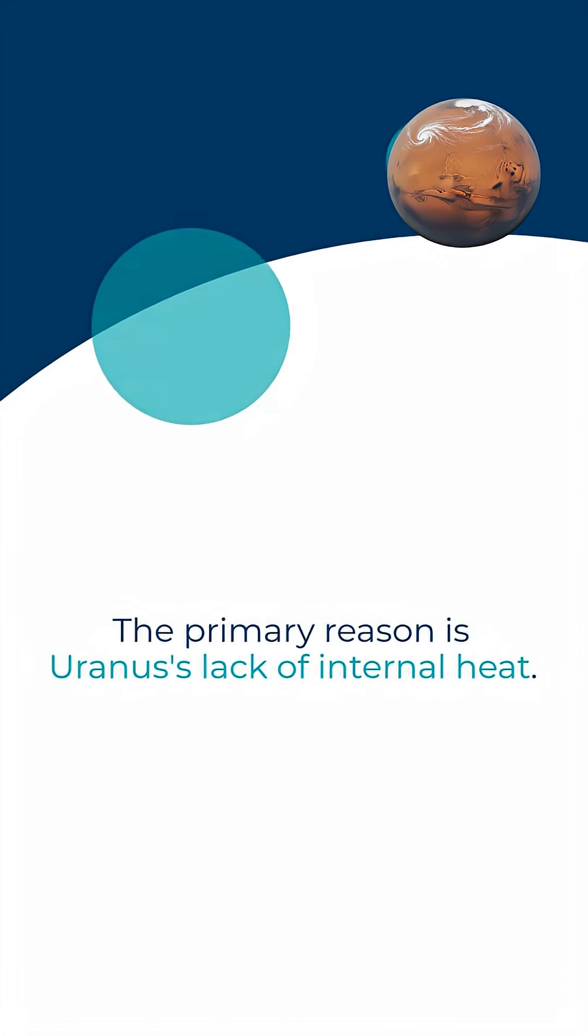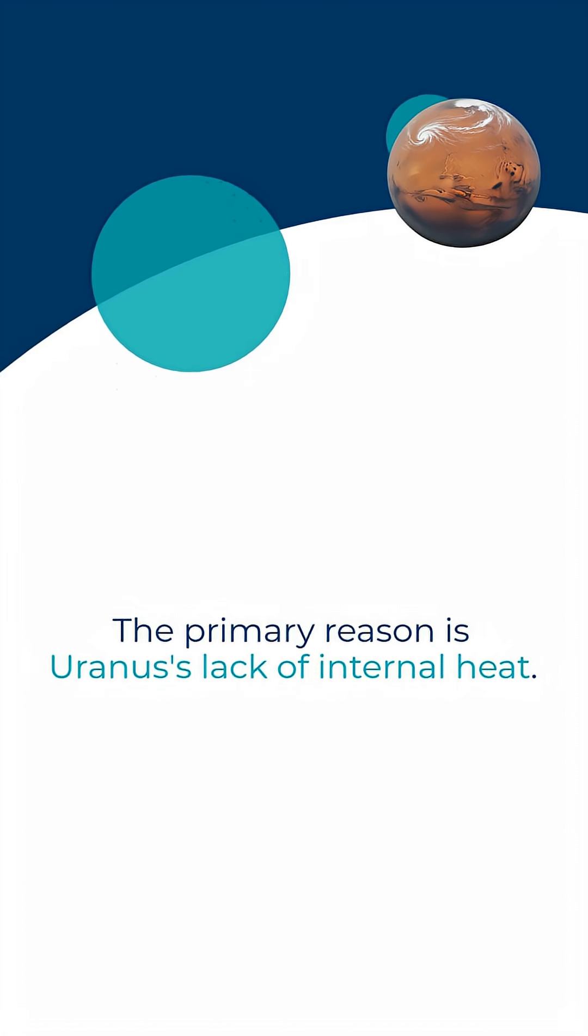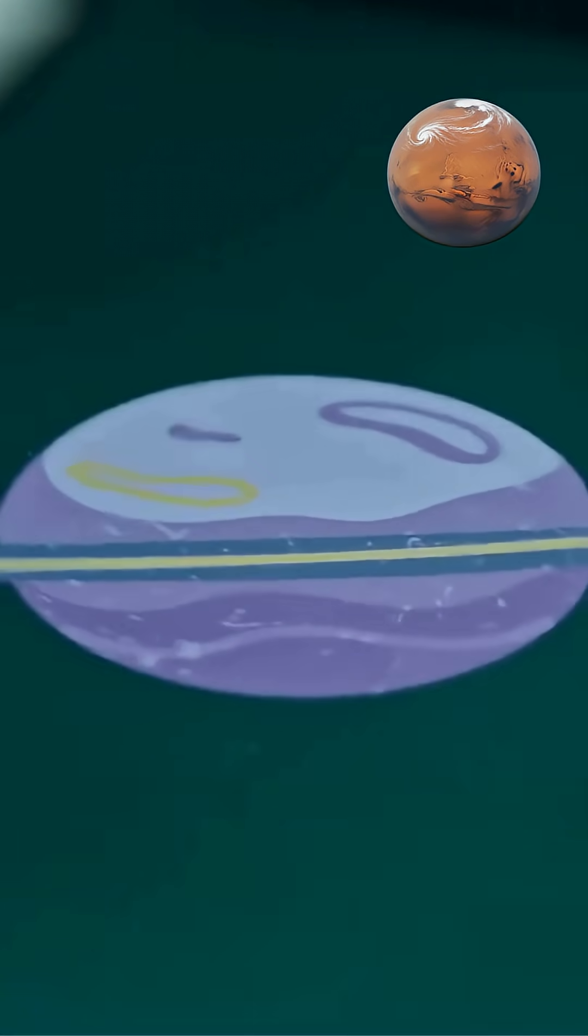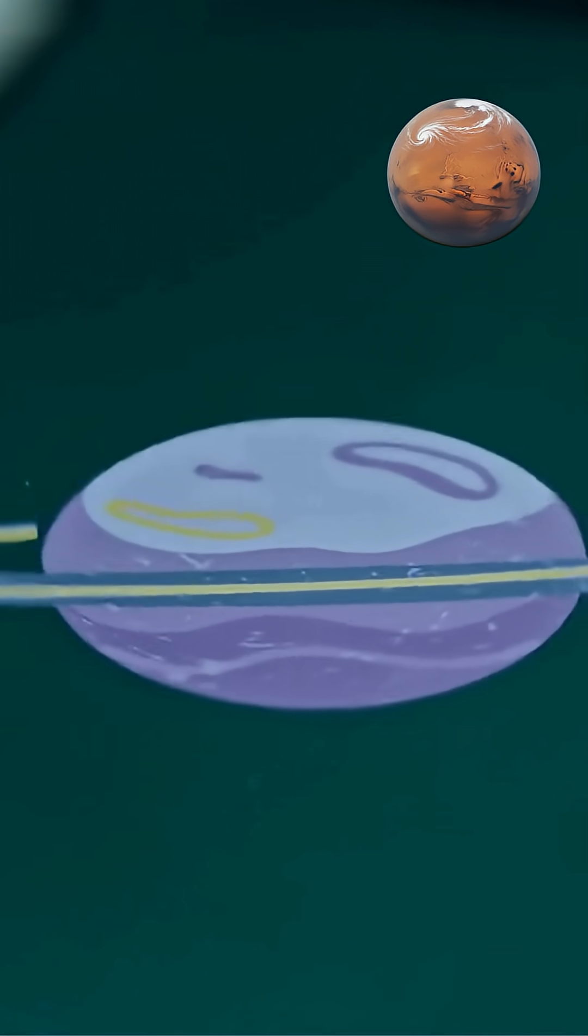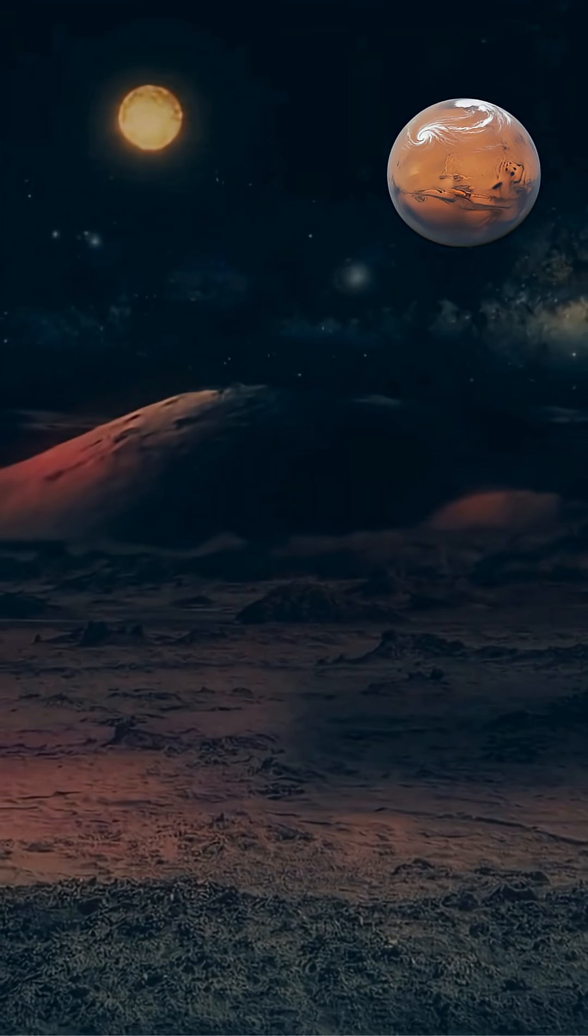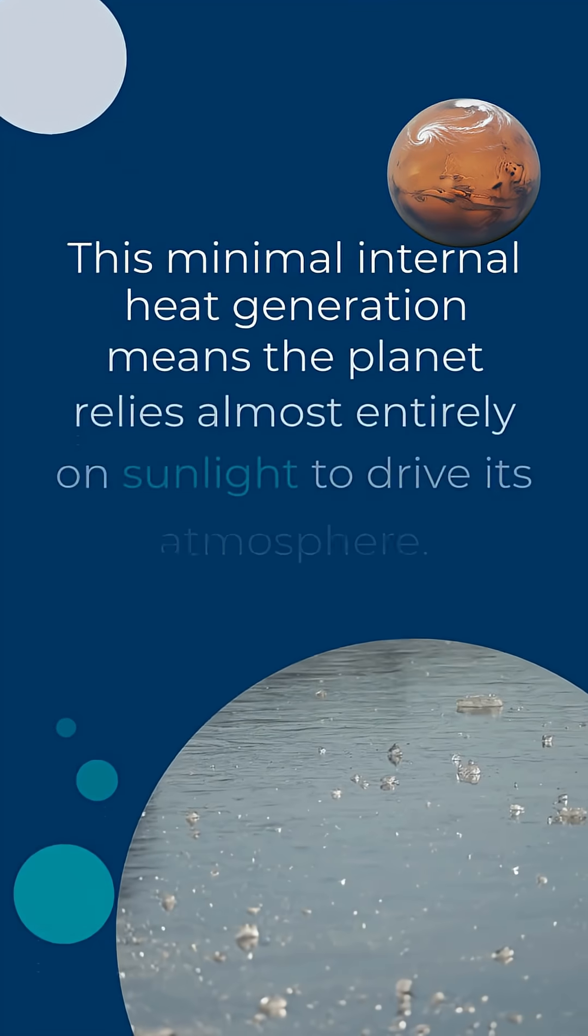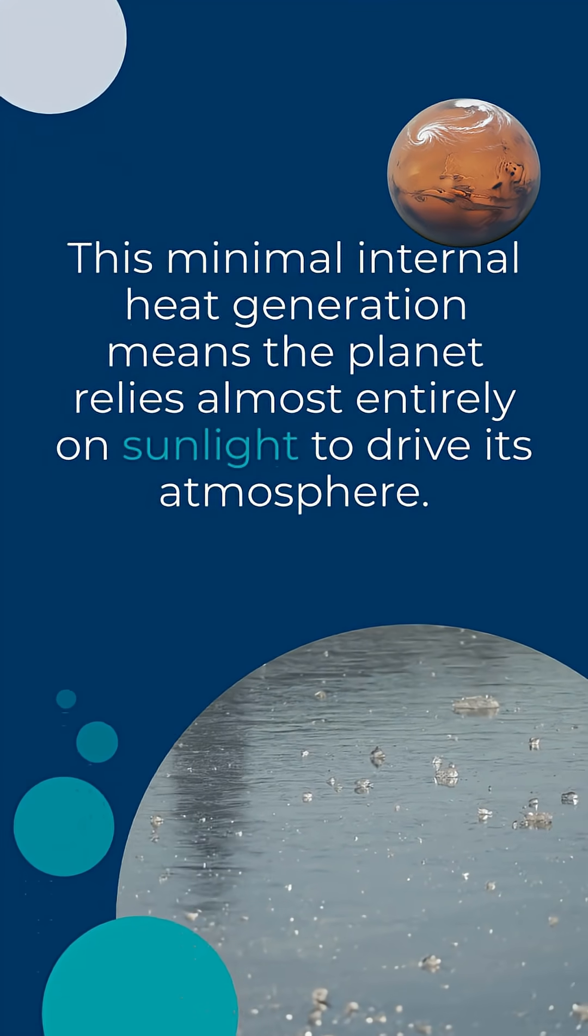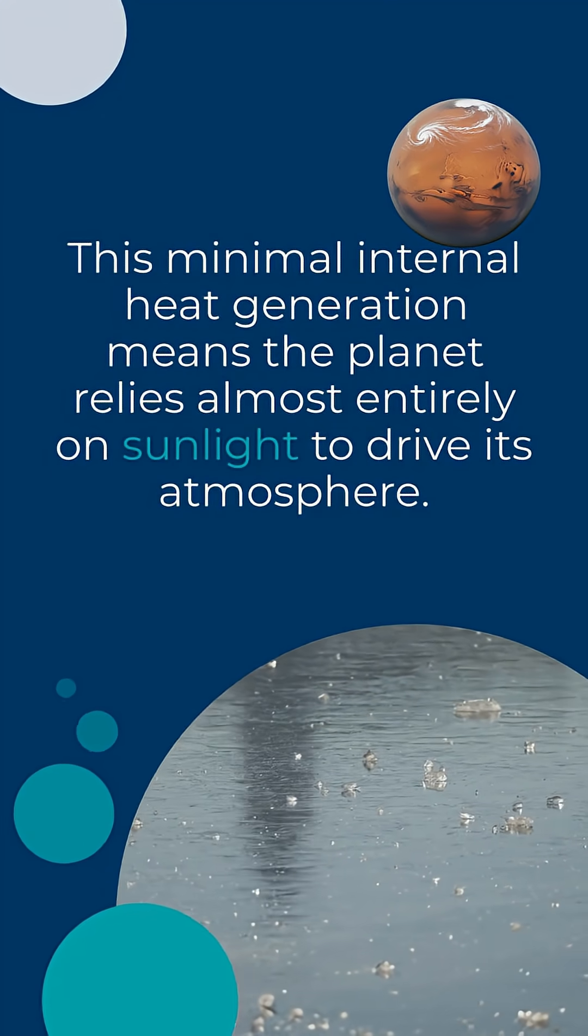The primary reason is Uranus's lack of internal heat. Unlike Jupiter, Saturn, and Neptune, which radiates significantly more heat than they receive from the Sun, Uranus emits only slightly more heat than it absorbs. This minimal internal heat generation means the planet relies almost entirely on sunlight to drive its atmosphere.